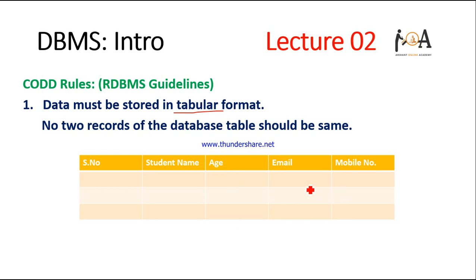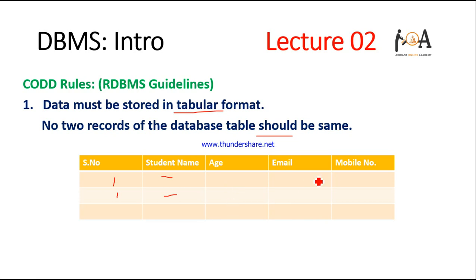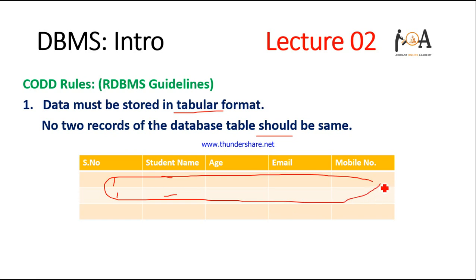A table must be there, and data must be stored in tabular format — for example, fields like serial number, student name, age, email, and mobile number. For bank account data: serial number, account holder's name, account number, loan amount, etc. No two records in the database table should be the same — every record must be unique.